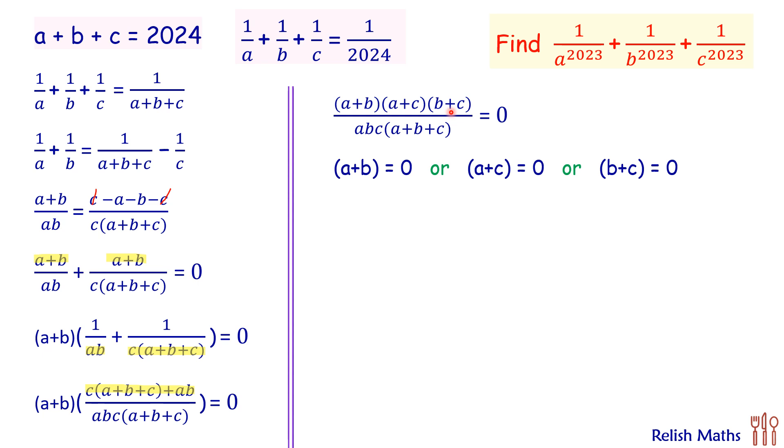Or we can say that this thing is true if and only if either a equals minus b, or a equals minus c, or b equals minus c. So here, as you see, a, b, c are all symmetrical, so we can take any one of these outcomes to solve further. So let's take that a equals minus b.